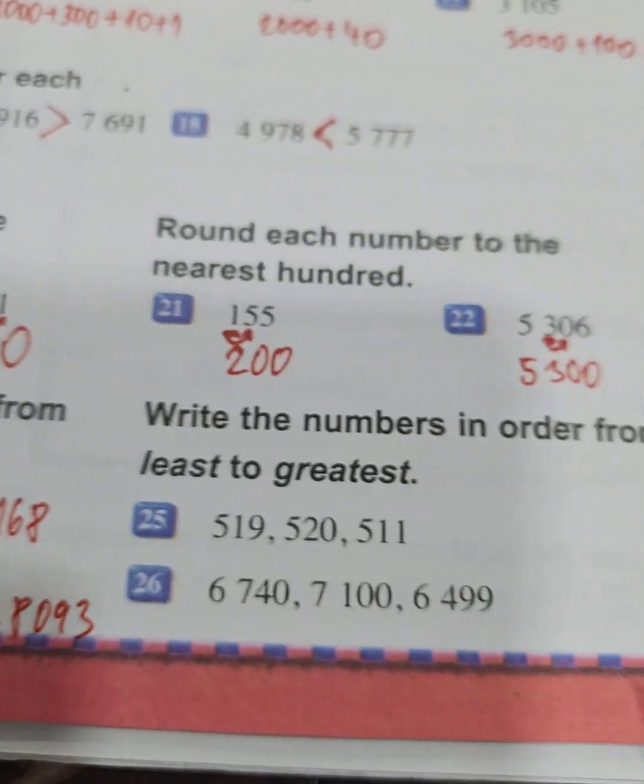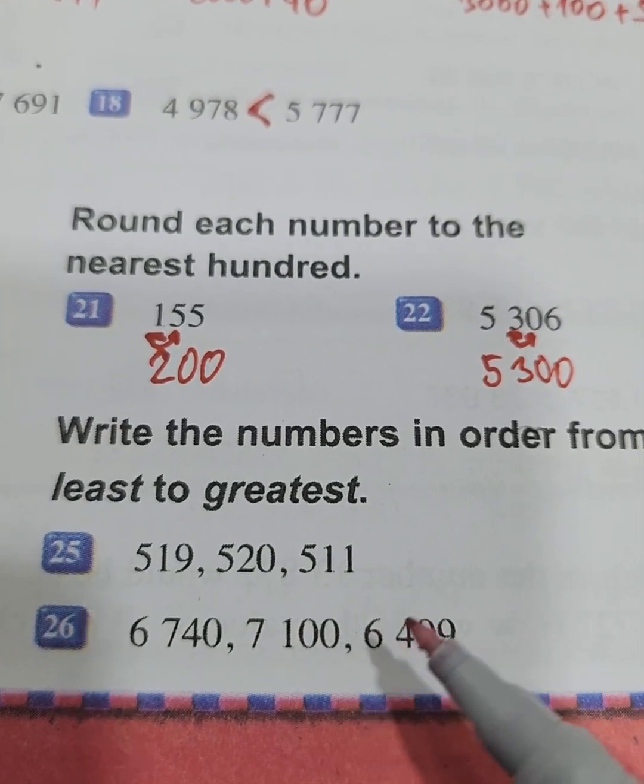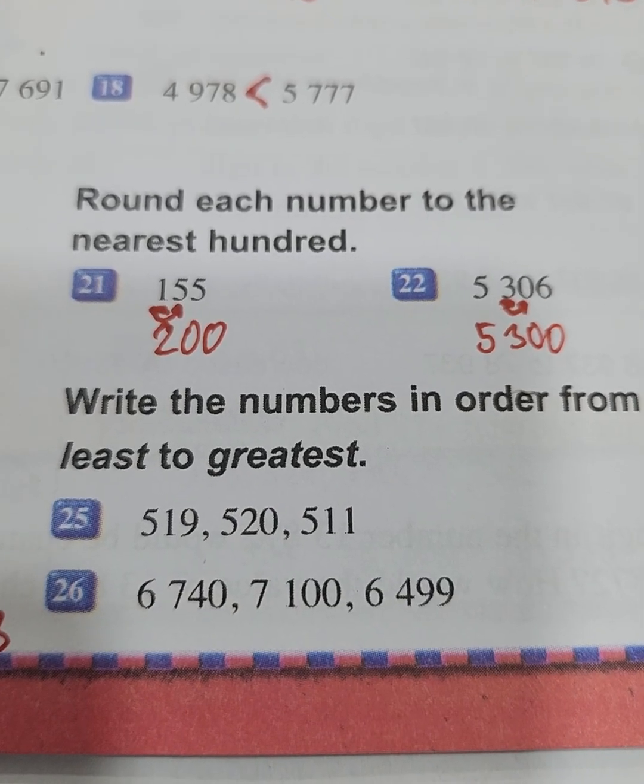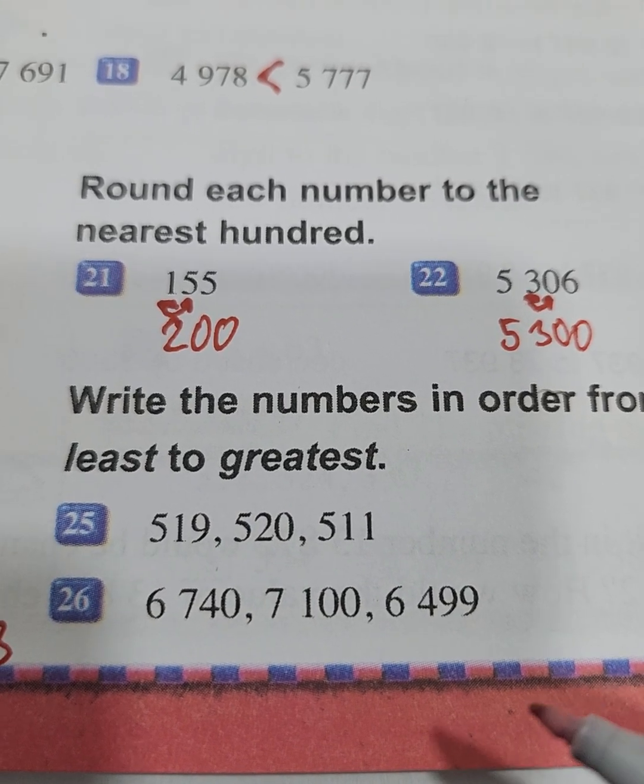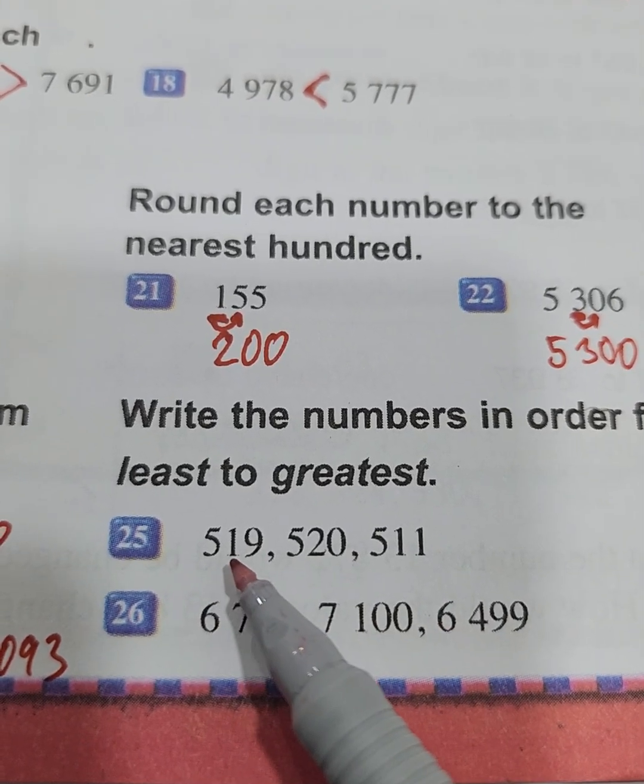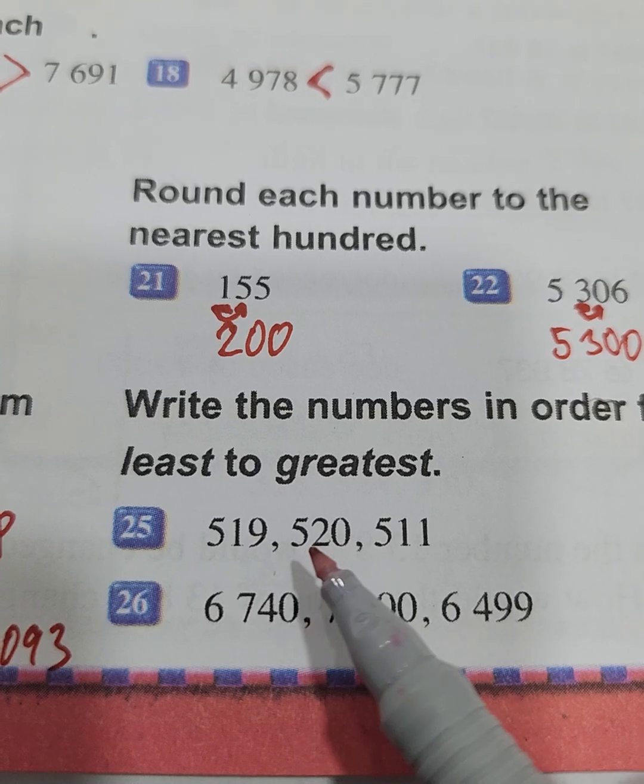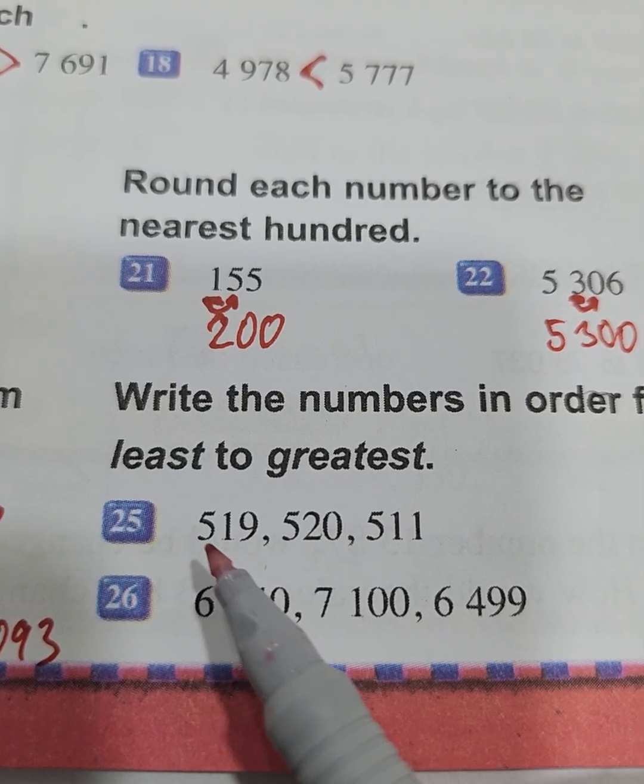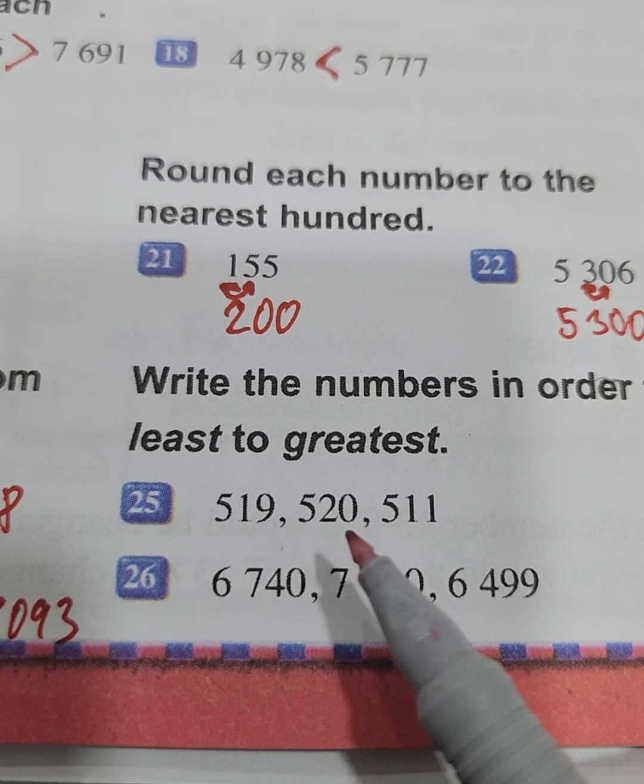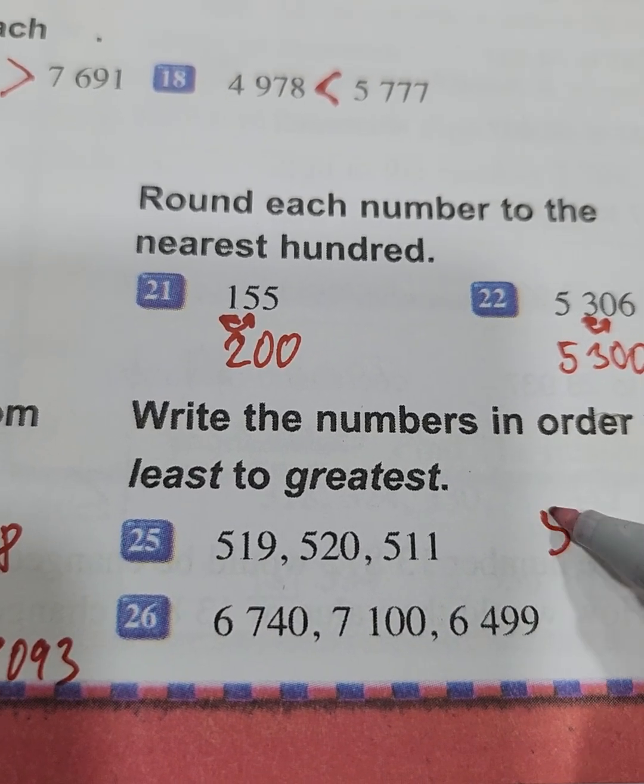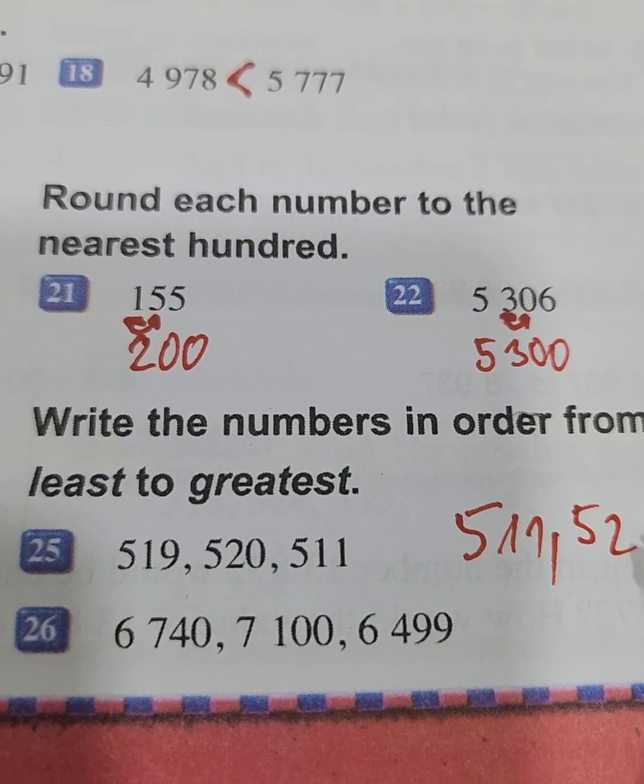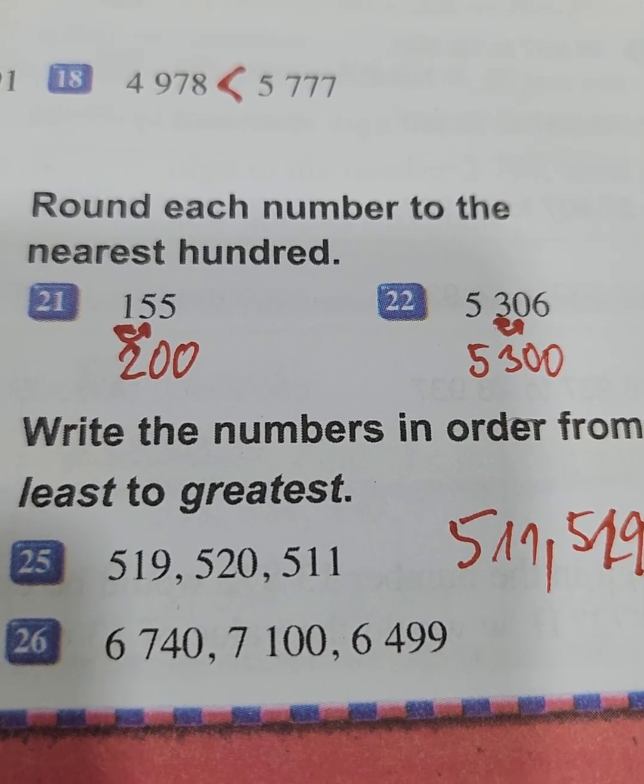Now here, the last task is write the numbers in order from least to greatest. So we will start with the smallest number. We have 519, 520, and 511. The place of hundreds, they are all the same. We will look at the place of tens: 19, 20, 11. So the least is 511, then 519, and 520.